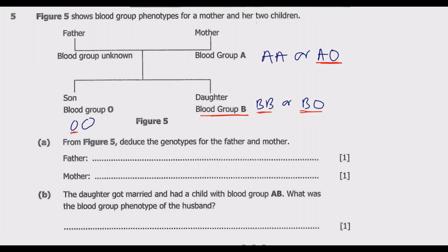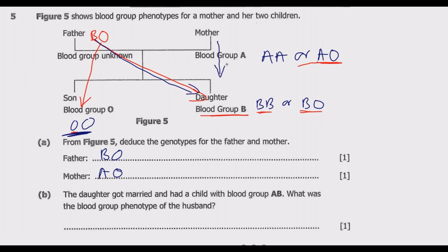The father donated one O to the son and one B to the daughter, while the mother donated one O to the daughter and one A to the daughter. So the father will have BO and the mother will have AO. The father and mother both donate O to give the son blood group OO, and the father donates B to the daughter while the mother donates O, giving the daughter BO.